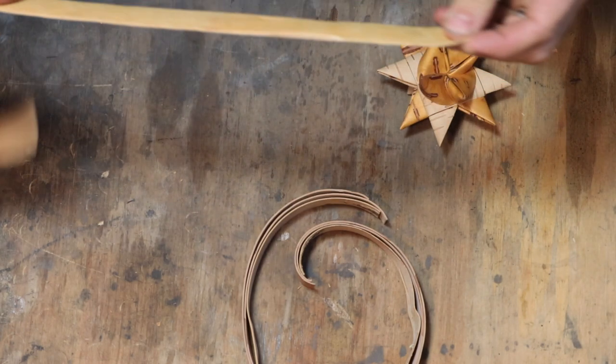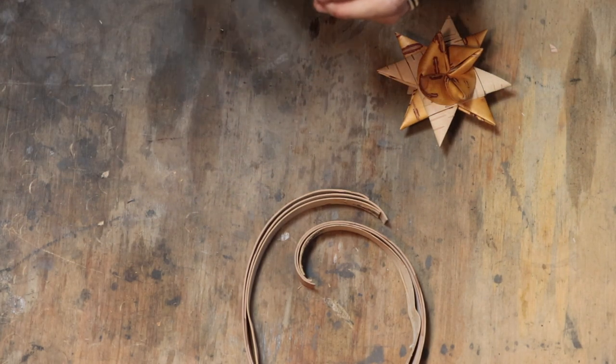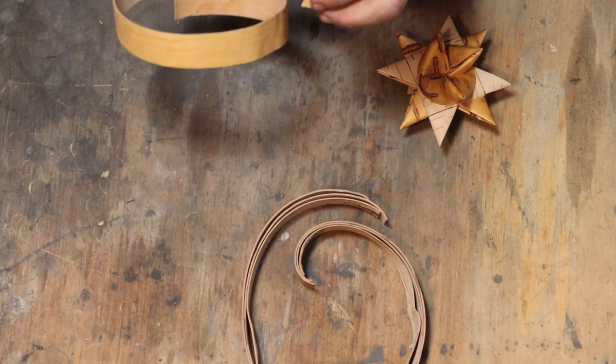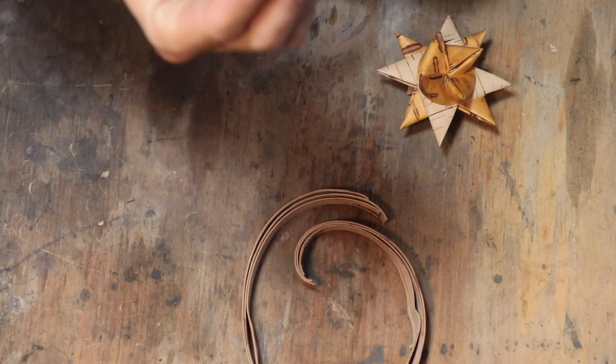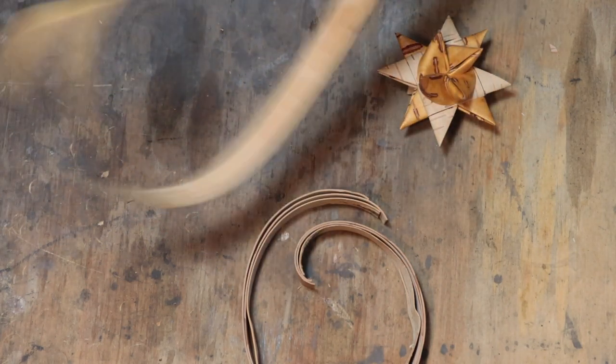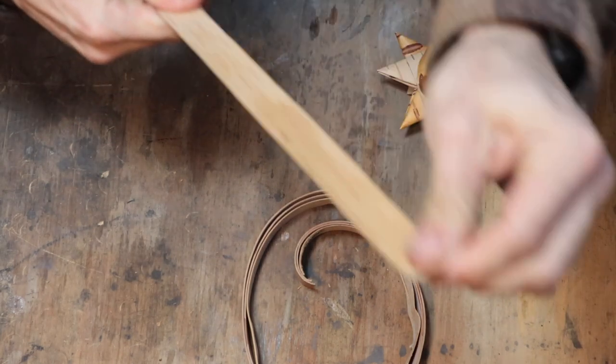What is useful to do beforehand, however, is just to lube it up a little. I'm going to use some linseed oil, so I'm just going to get some on my fingers and pass it over the birchbark.